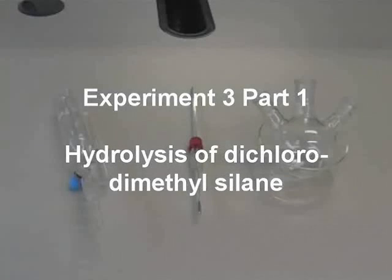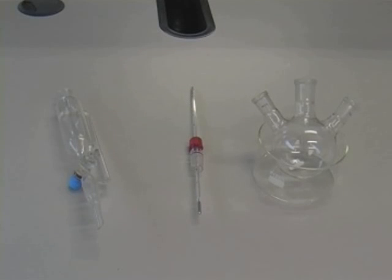The apparatus required for this preparation is a 250ml three neck round bottom flask, a thermometer in a holder, a pressure equalising dropping funnel and a glass bowl.